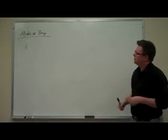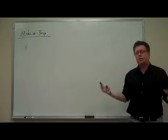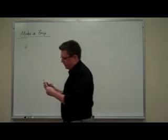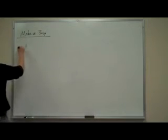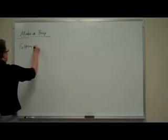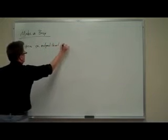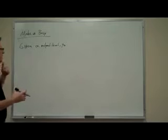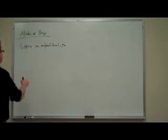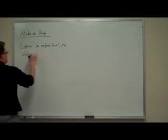Now the next problem we have on our list is called the make versus buy problem. What you're looking at here is trying to decide, given an output level Q0, what is the cheapest way of producing that output? What is the cheapest technology?